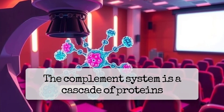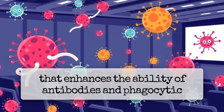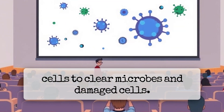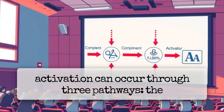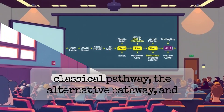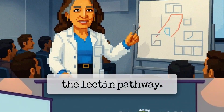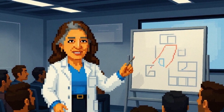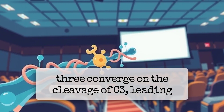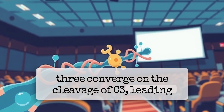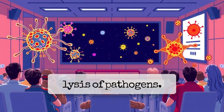The complement system is a cascade of proteins that enhances the ability of antibodies and phagocytic cells to clear microbes and damaged cells. Complement activation can occur through three pathways: the classical pathway, the alternative pathway, and the lectin pathway. All three converge on the cleavage of C3, leading to opsonization, inflammation, and direct lysis of pathogens.